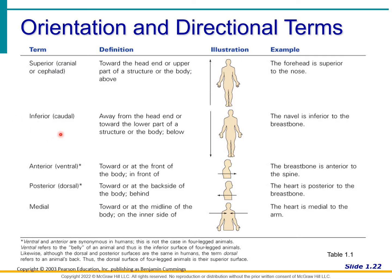Next is inferior — away from the head or towards the lower part, located below another structure. For example, the navel or belly button is inferior to the breast bone, which is the sternum located in the middle of the ribs. The belly button is at a lower area in comparison to the breast bone — so this is also correct.